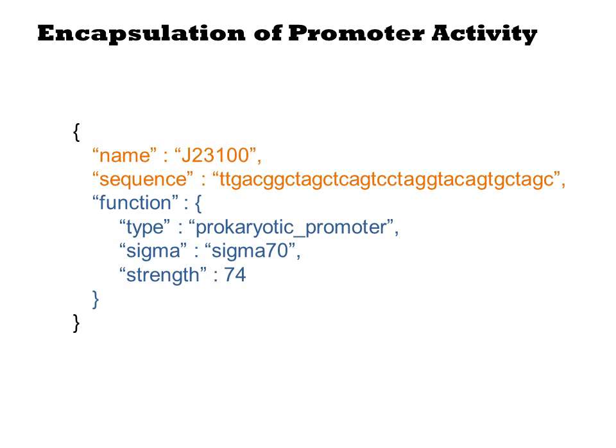Relative promoter units is one strategy for encapsulating the strength of a promoter. Encapsulation is the attachment of formal properties to a DNA sequence. This is the essence of the part concept, but it is still not entirely clear what information should be captured about a sequence and how it should be measured. Here is an example of what it might look like.